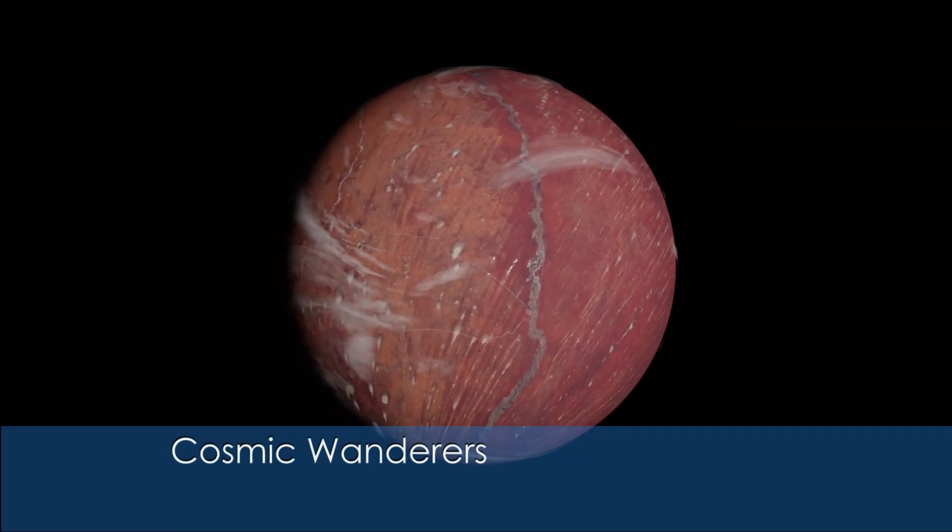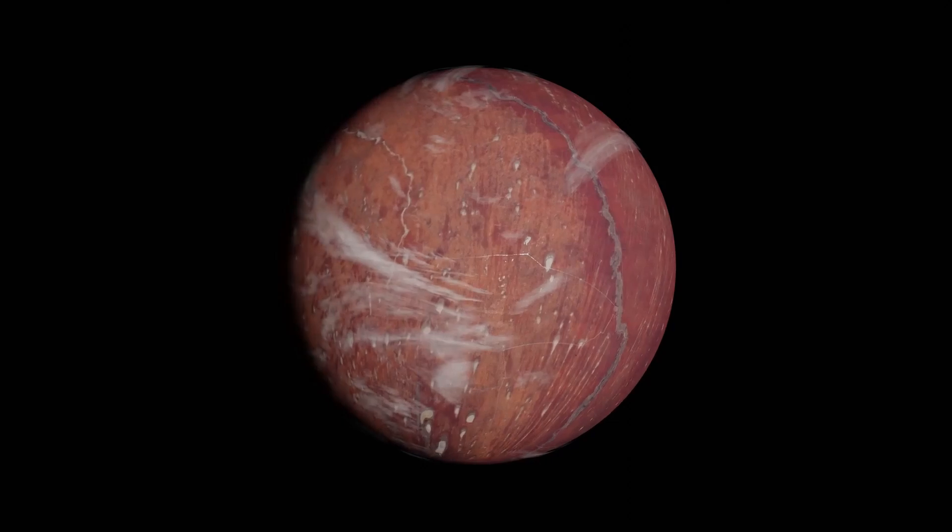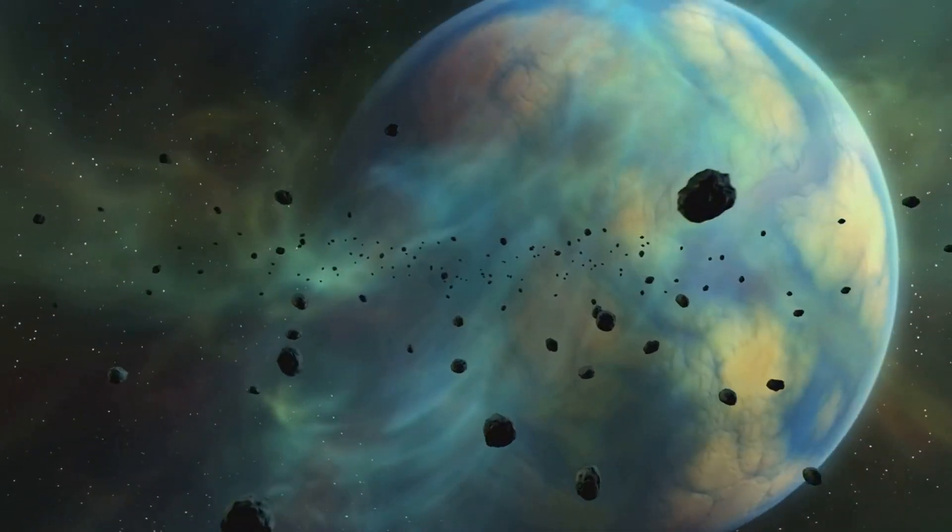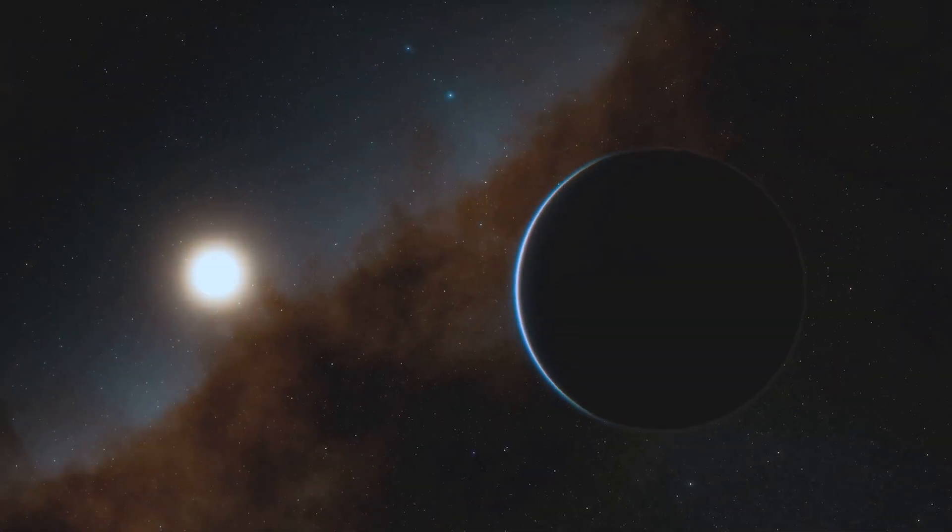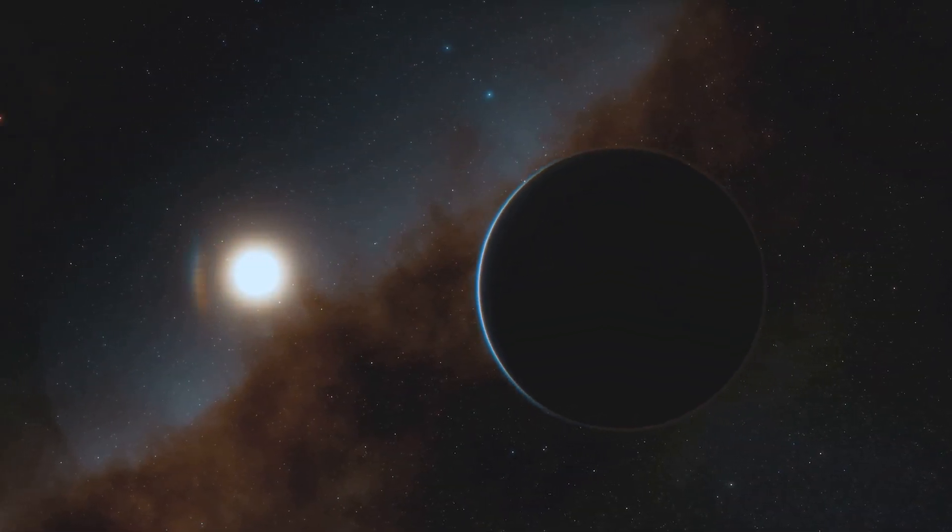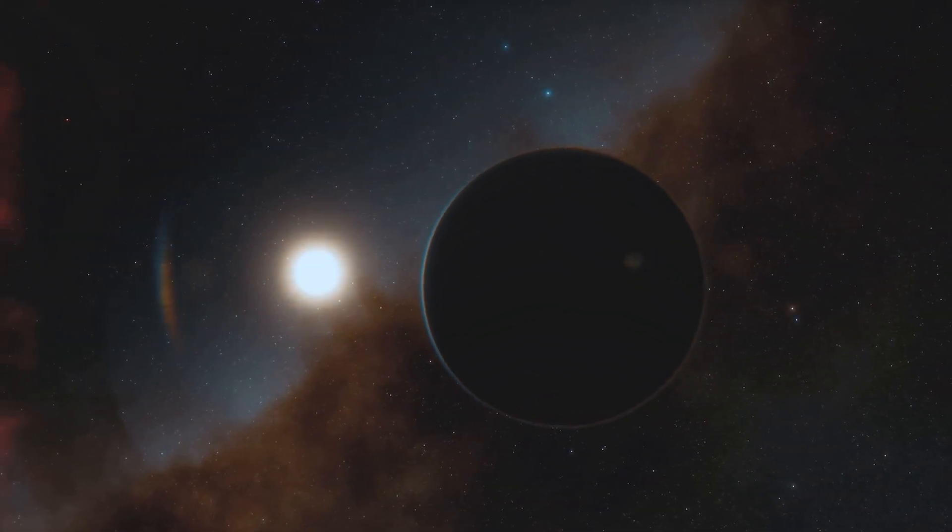Within the infinite expanse of space drift celestial nomads—rogue planets cast adrift from their parent stars, wandering the cosmos alone. Imagine these dark, silent worlds, eternally sailing through the black, devoid of any warmth or light. But as unsettling as rogue planets might be, they pale in comparison to the true monsters lurking out there: black holes.